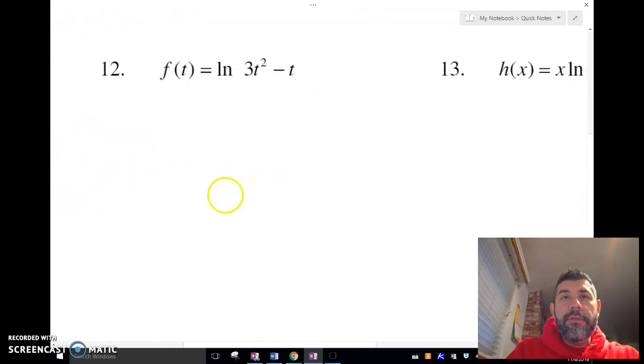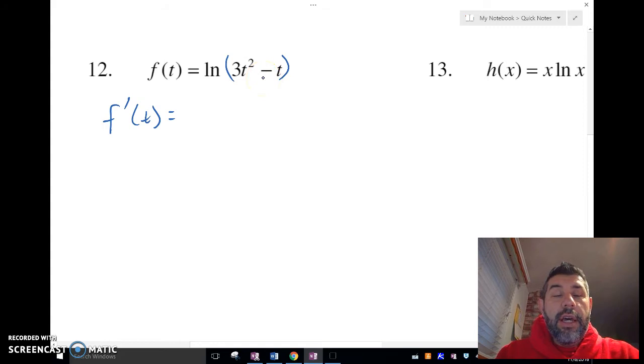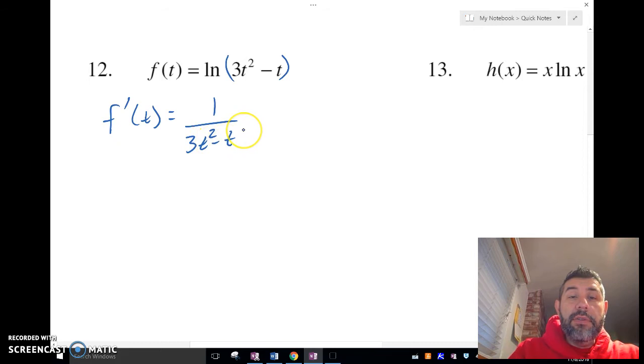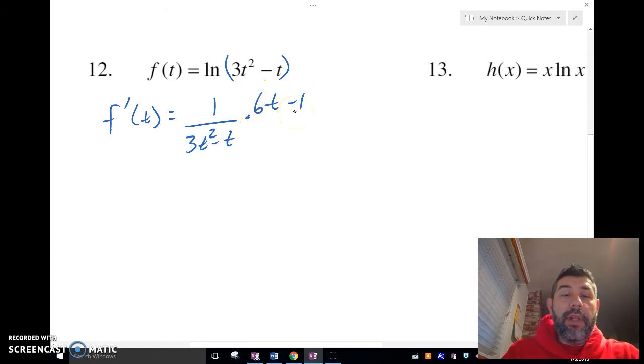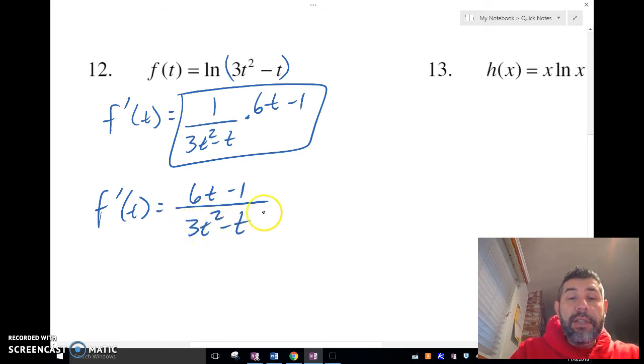Here is the next one. What's the derivative of f prime of t? This is ln—I should have put a parenthesis there, it makes it a little easier—1 over 3t squared minus t, so it's 1 over the inside times the derivative of the inside, which is 6t minus 1, and we can leave it like that. Just make sure that you realize this multiplication is really on the numerator, so if you want to do it all at one shot using that formula I told you before, it's the derivative of the inside divided by what's inside.